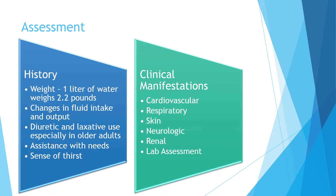Clinical manifestations of dehydration include cardiovascular changes: an increase in heart rate but a decrease in blood pressure and pulse pressure. Orthostatic hypotension may be present. Respiratory changes include an increase in rate but a decrease in blood volume, reducing perfusion and oxygenation. During skin and mucous membrane assessment, note color, moisture, and turgor. Skin turgor in older adults should be assessed over the sternum or forehead, as aging skin loses elasticity and tents on the hands and arms even when well hydrated.